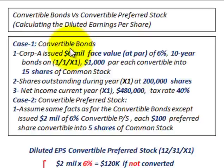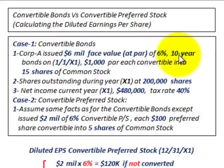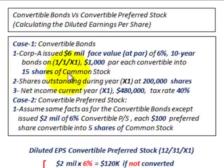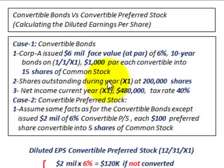For convertible bonds, Corporation A issued $6 million worth of bonds at face value, par, with a 6% interest rate on a yearly basis. They're 10-year bonds issued on 1/1/X1 at the beginning of the year, with $1,000 par value each, and they're convertible into 15 shares of common stock. So if a bondholder owns a $1,000 bond, he can convert it into 15 shares of common stock. Shares outstanding during year X1 are 200,000 shares of common stock.